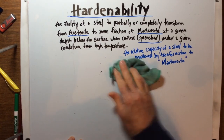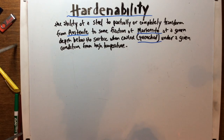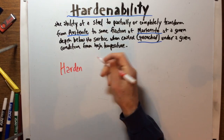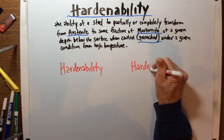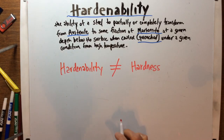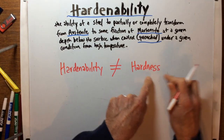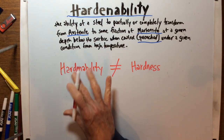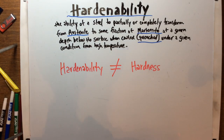One last thing: you cannot use these two terms interchangeably — hardenability and hardness are not the same. Hardness is just a representative value of a metal with respect to a certain hardness test or scale. Hardenability is the capability of that steel to transform into martensite. That's what hardenability is about.